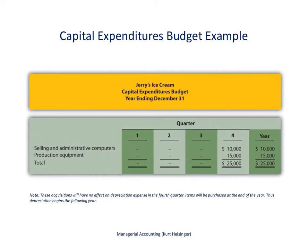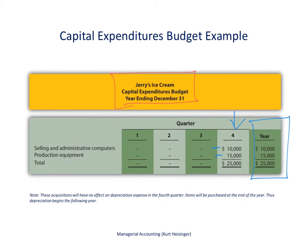Here's an example of the capital expenditures budget for Jerry's Ice Cream, the company I use throughout all of my operating budget examples. I've posted videos for all of the operating budgets for Jerry's Ice Cream and they all link together. For this coming year, ending December 31, set up by quarter, they are planning not to make any purchases in the first three quarters. In the fourth quarter they plan two purchases: selling and administrative computers expected to cost $10,000 and production equipment expected to cost $15,000. This quarterly information is then summarized for the year at the far right.